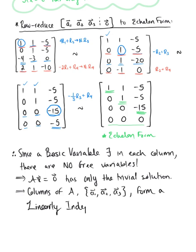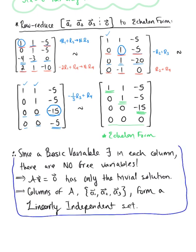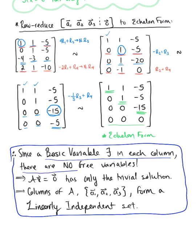This is our final answer. Even though we have that row of zeros, since there is a basic variable in each of the columns, there are no free variables — meaning the homogeneous equation has only the trivial solution. Therefore, by definition, the columns of matrix A form a linearly independent set.